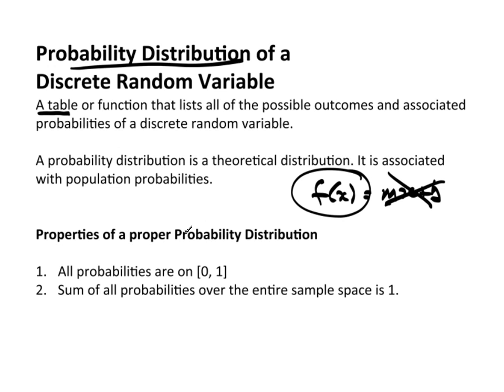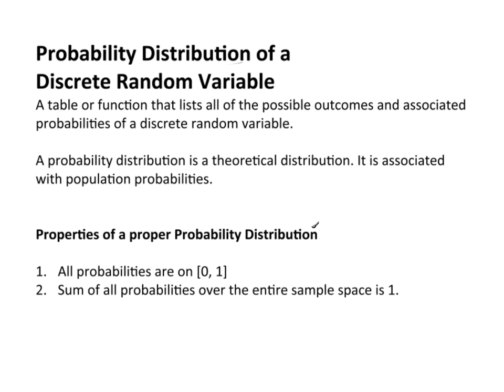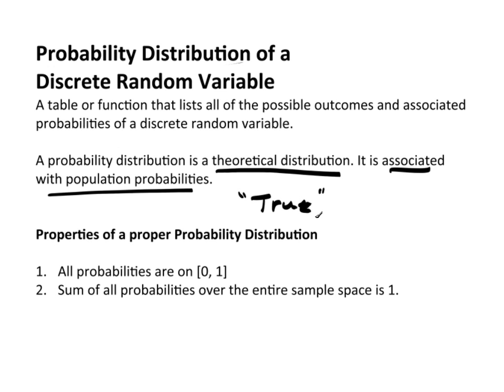A probability distribution is actually a theoretical distribution. By theoretical distribution, what we really mean is that it's associated with the population probabilities — the true probabilities of an event. We can create an empirical probability distribution, but if we do, we specifically label it as an empirical probability distribution. Whenever you just see the term probability distribution, you know you're talking about the true theoretical values.